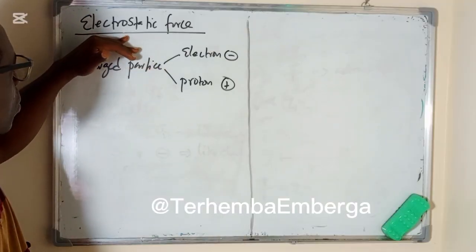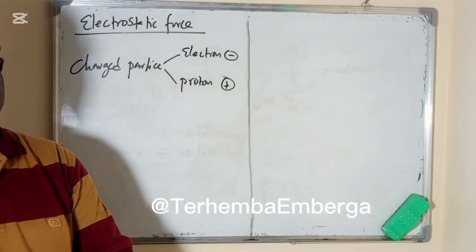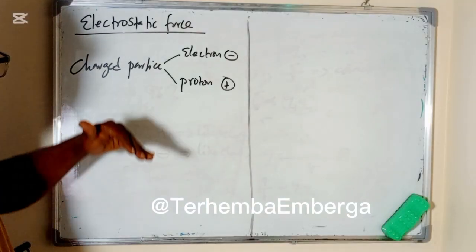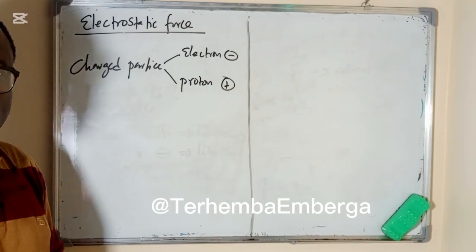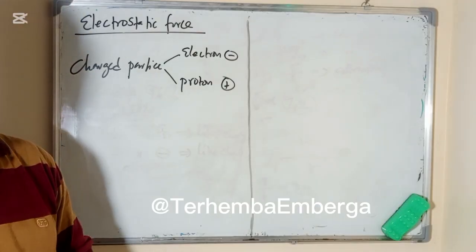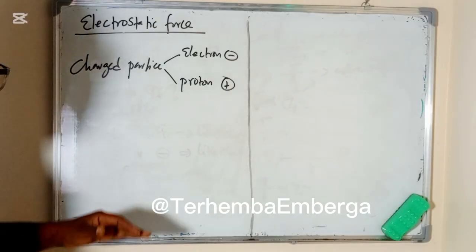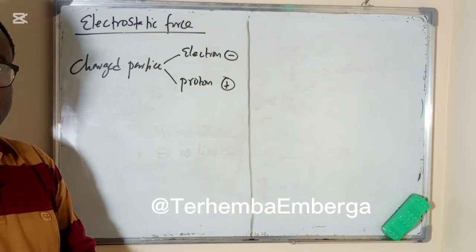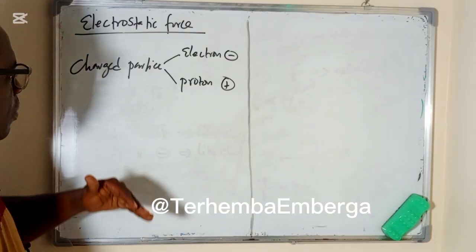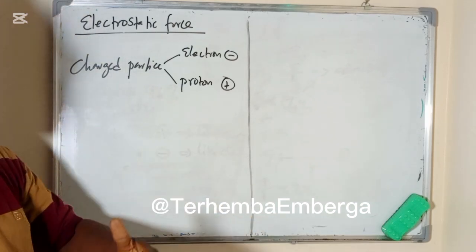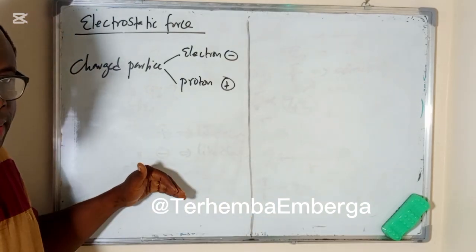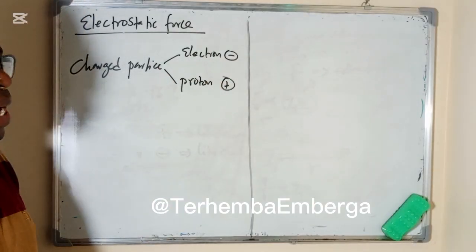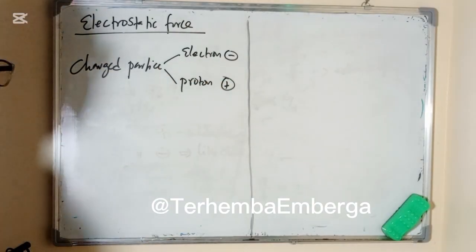That is the reason why electrostatic force is also called Coulomb's force, because the scientist that discovered this is Coulomb. That is why it is called Coulomb's law. Coulomb's law is stated in two parts — you can call it the first law and the second law. But before we go into Coulomb's law, let us describe these charges.